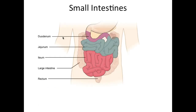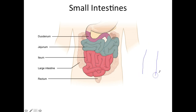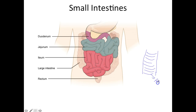Let's talk about the circular folds. If we take a portion of the small intestine and cut it open longitudinally, what you'll see is that the mucosa on the inside forms these circular folds. The wrinkles inside the small intestines are circular — these are called plica circularis, or circular folds.